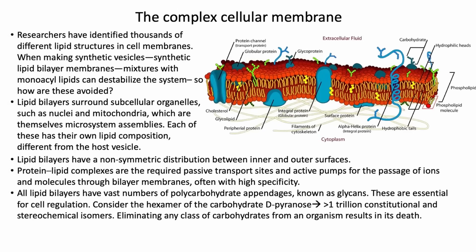Lipid bilayers also have a vast number of carbohydrate appendages. These are called glycans — the artist is just showing us a few of these, but a cell is covered with them. This is how cells recognize each other. By these carbohydrate assemblies, they recognize each other — they have recognition patterns so you can tell one cell from another.